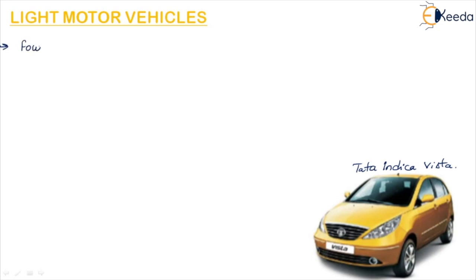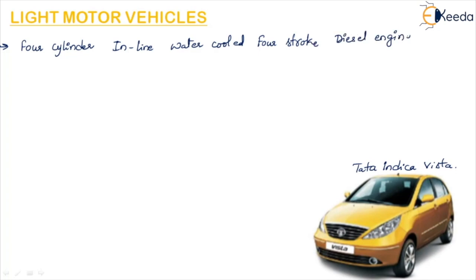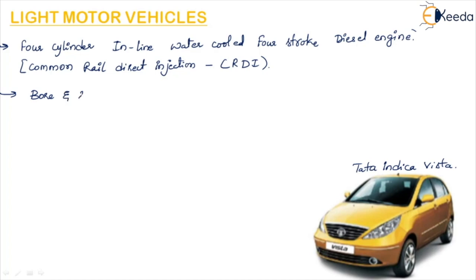The Tata Indica Vista has a four-cylinder inline water-cooled four-stroke diesel engine with common rail direct injection (CRDI). The bore and stroke — bore being the diameter of the cylinder and stroke being the distance the piston travels — is 75 and 80 mm respectively.